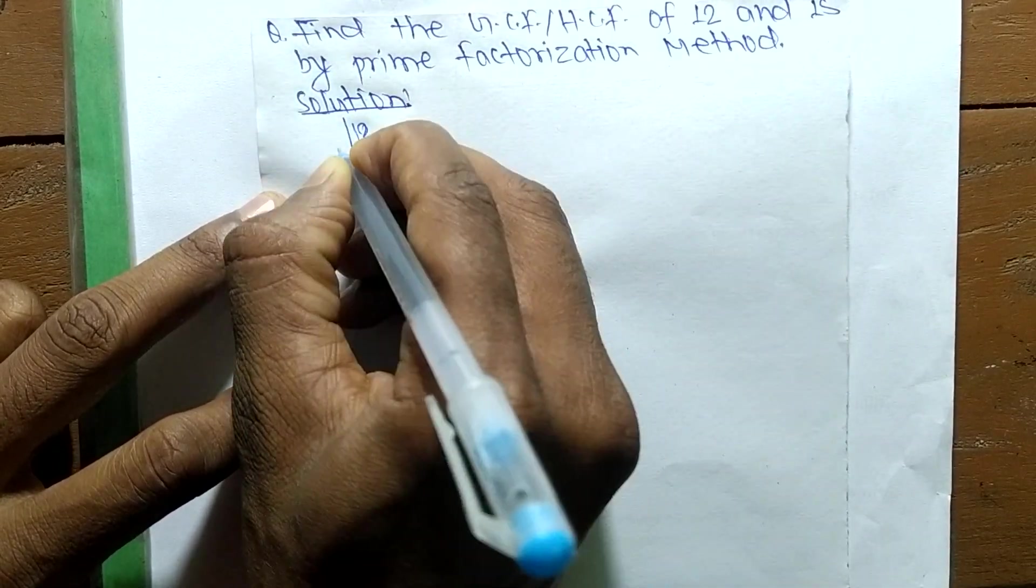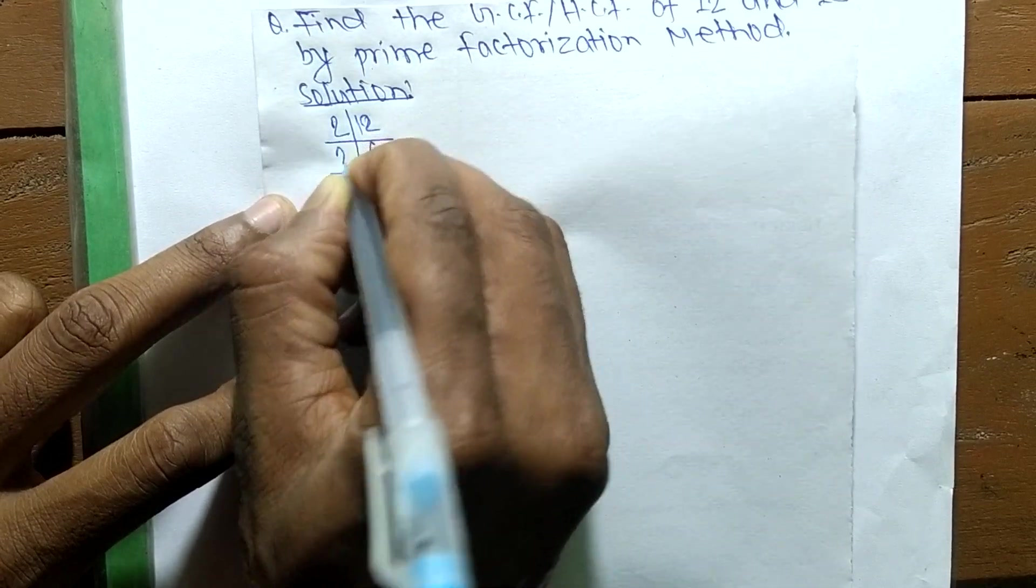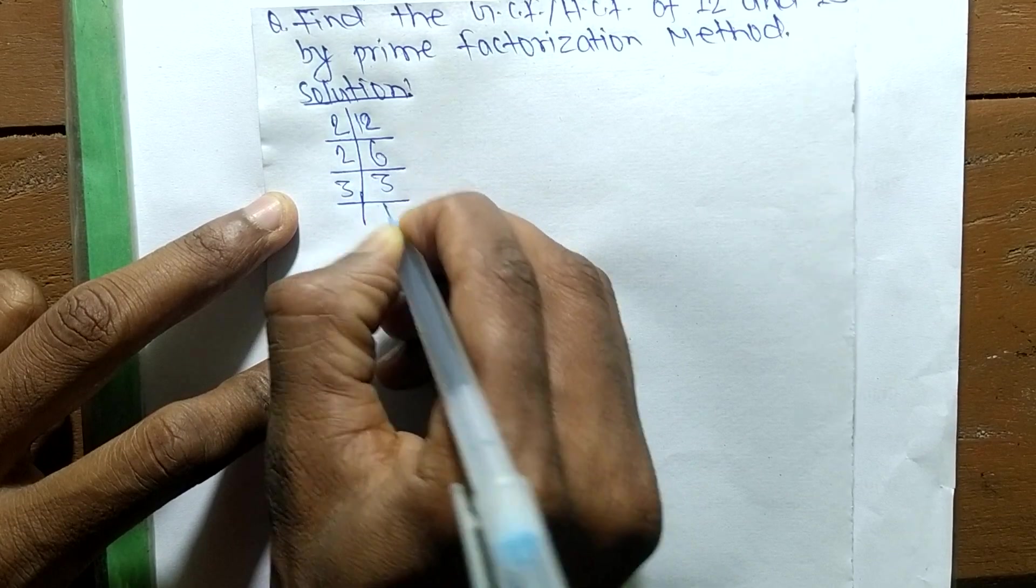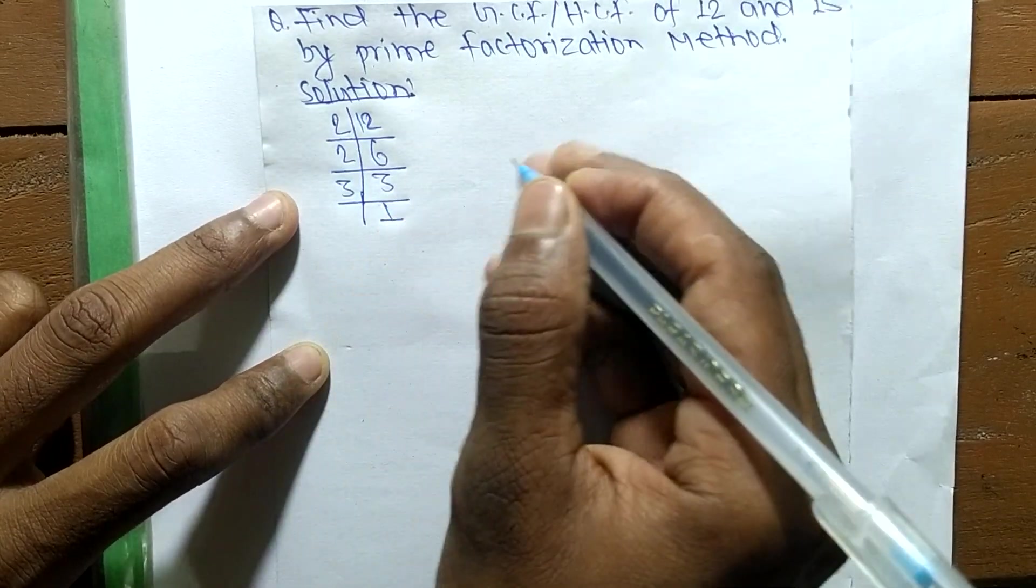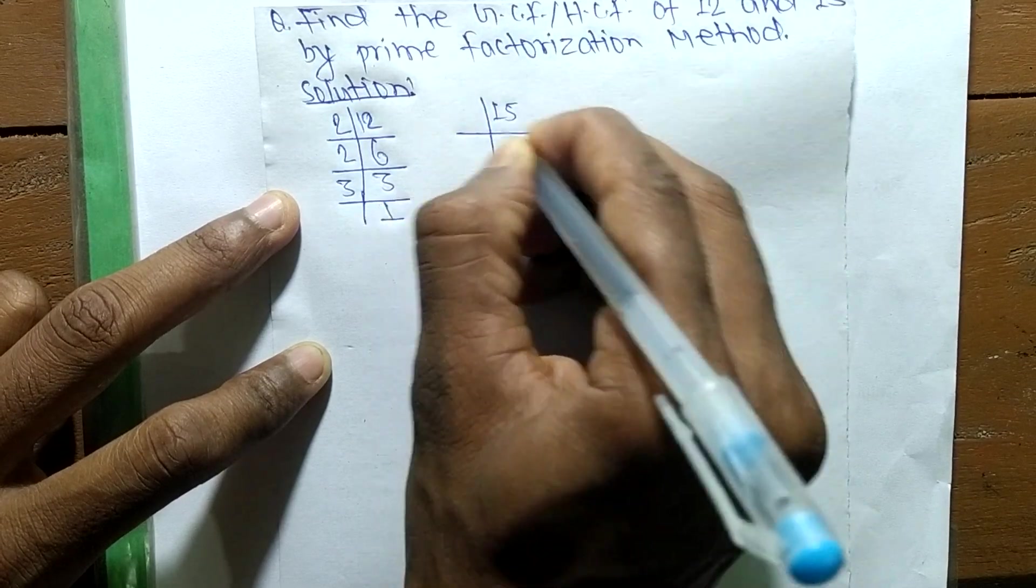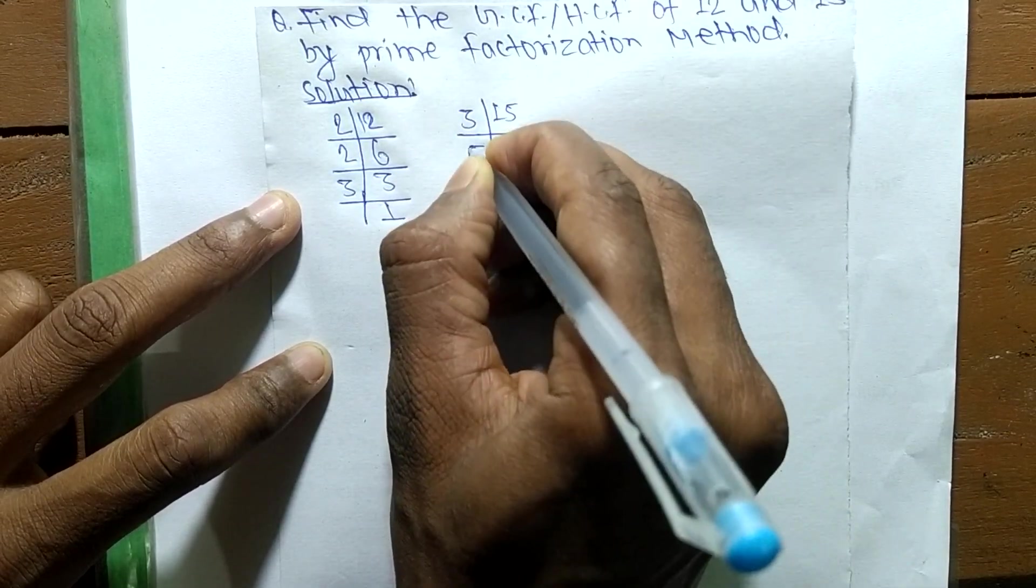So the prime factors of 12 are: it is 2 times 6 means 12, 2 times 3 means 6, and 3 times 1 means 3. In the same way, the prime factors of 15 are: it is 3 times 5 means 15, and 5 times 1 means 5.